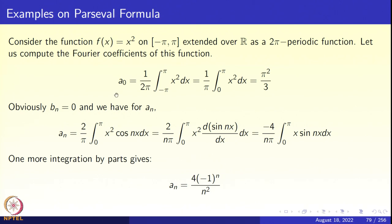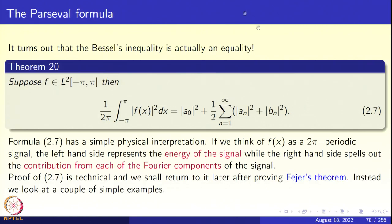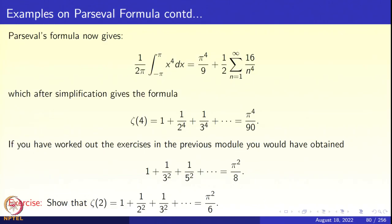Applying these to Parseval's formula 2.7: f(x) = x², so |f(x)|² = x⁴. Integrating x⁴ from −π to π and applying the formula, we get: 1/(2π) integral from −π to π of x⁴ dx = π⁴/9 plus one-half summation n=1 to infinity of 16/n⁴. After simplification, this yields ζ(4) = 1 + 1/2⁴ + 1/3⁴ + ··· = π⁴/90.